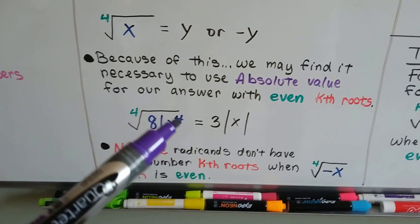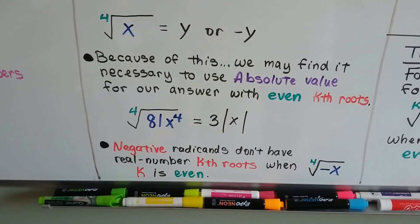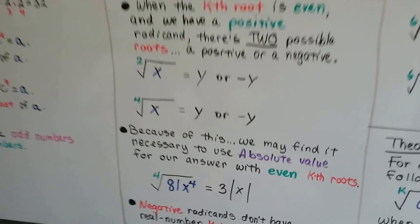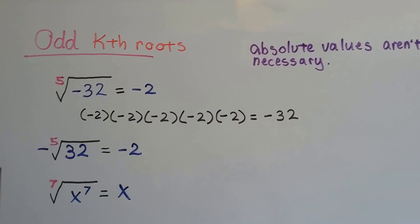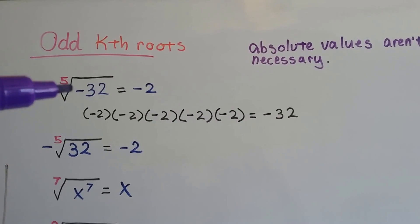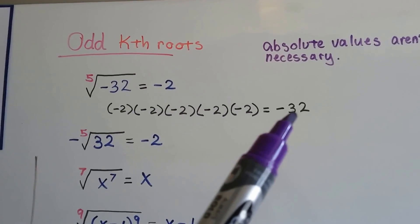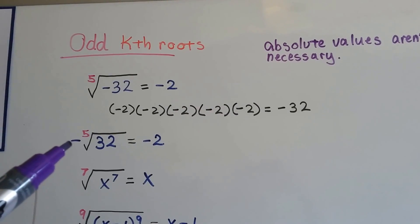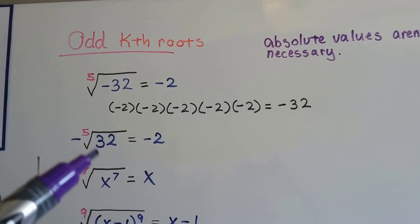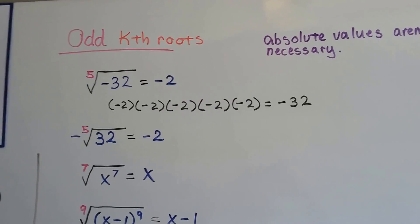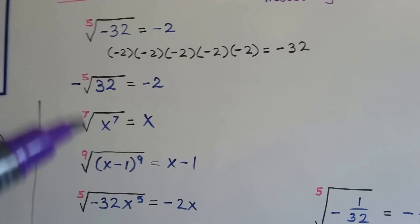Negative radicands don't have real number kth roots when the index is even. For the odd kth roots, absolute values aren't necessary. If we've got the 5th root of negative 32, it's going to equal negative 2, because if we multiply it to itself 5 times we get negative 32. Same if the negative sign is on the outside of the radical symbol — the negative 5th root of 32 is still negative 2. It's almost like there's an invisible 1 there that we can distribute. I'll talk about that more later in this chapter.